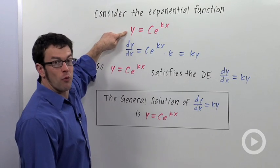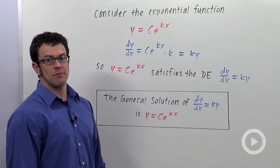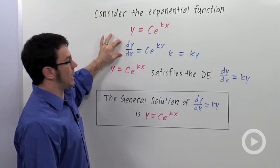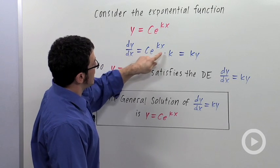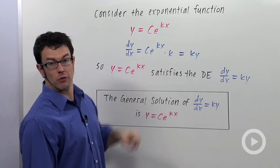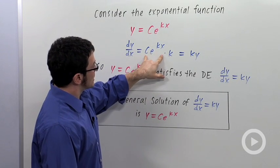Recall that an exponential function is of the form y equals c e to the kx. If you take the derivative with respect to x, you get c e to the kx times k, just from the chain rule. And of course, this is just y.